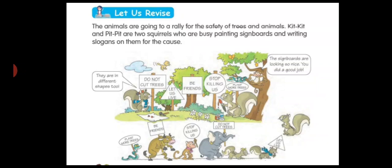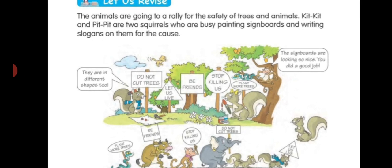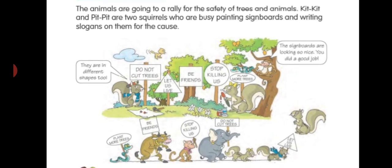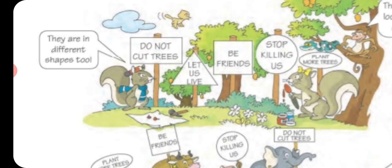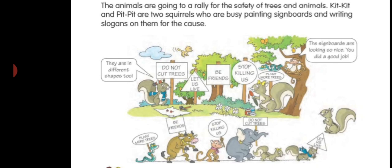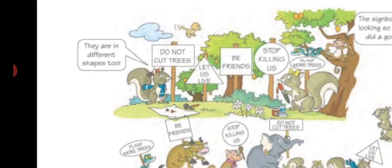Now let us revise. The animals are going to a rally for the safety of trees and animals. Here are two squirrels, Pit Pit and Kit Kit — they are both busy painting signboards and writing slogans. The signboards say: 'Do not cut trees,' 'Let us live,' 'Be friends,' 'Stop killing us,' and 'Plant more trees.'